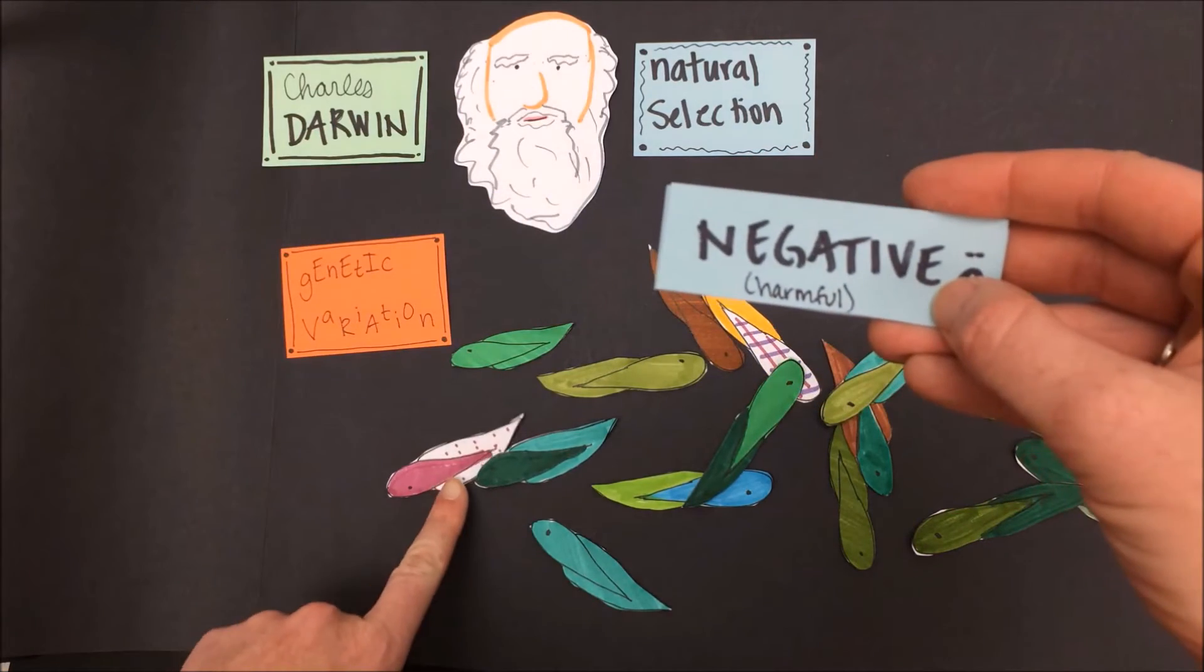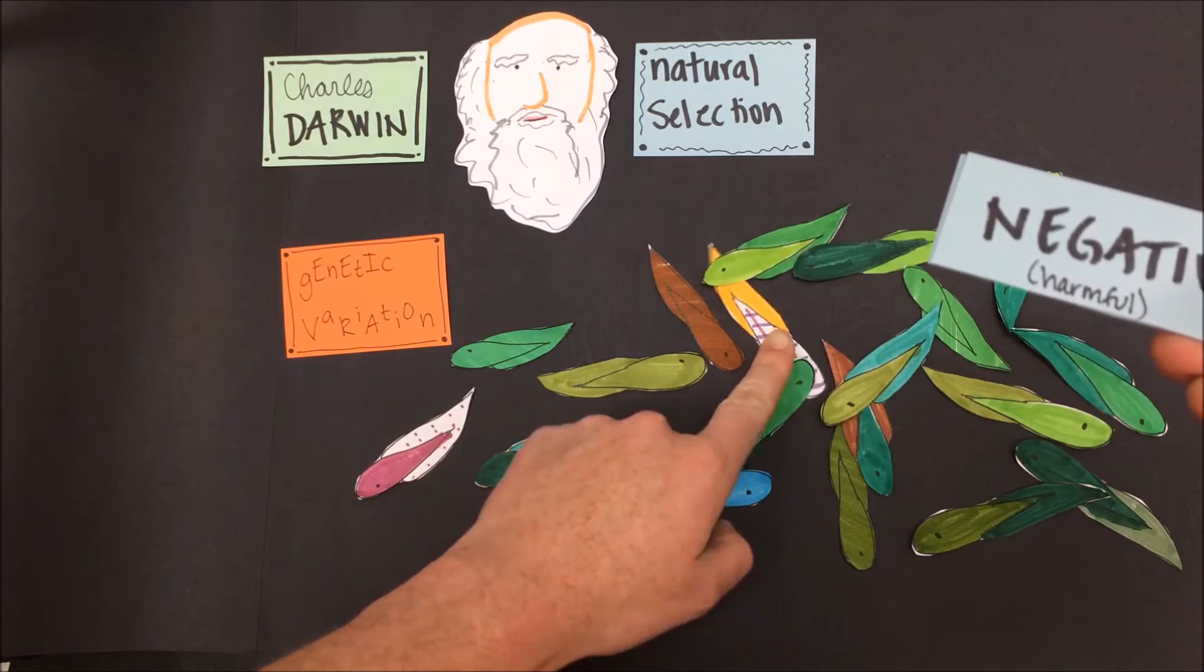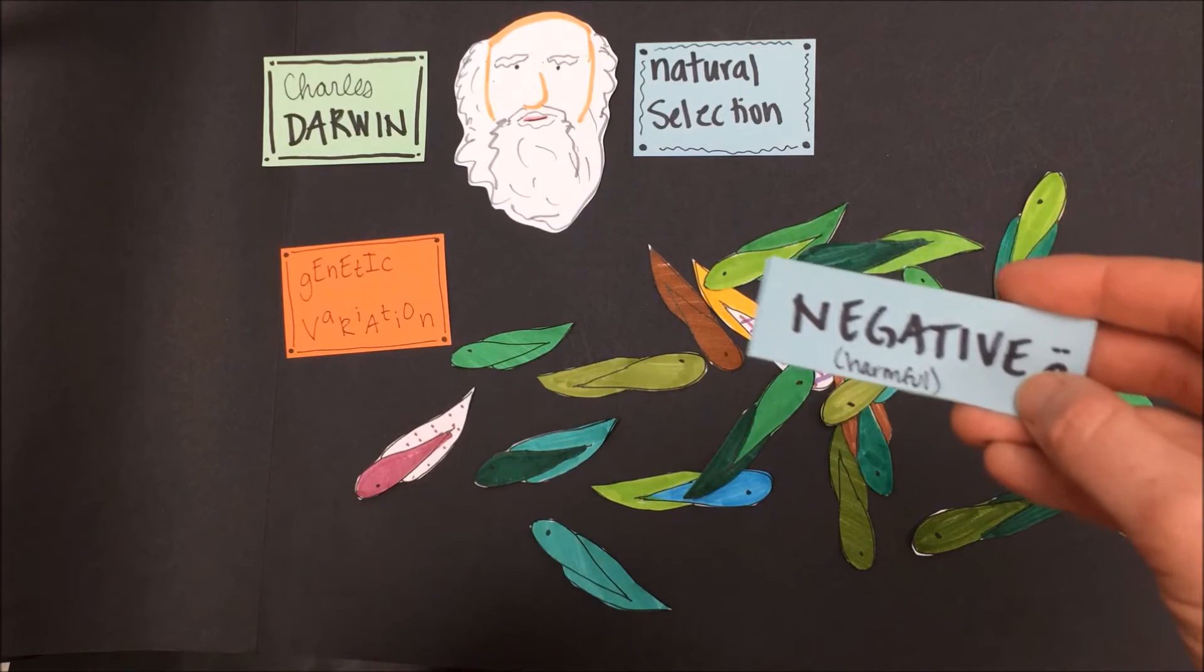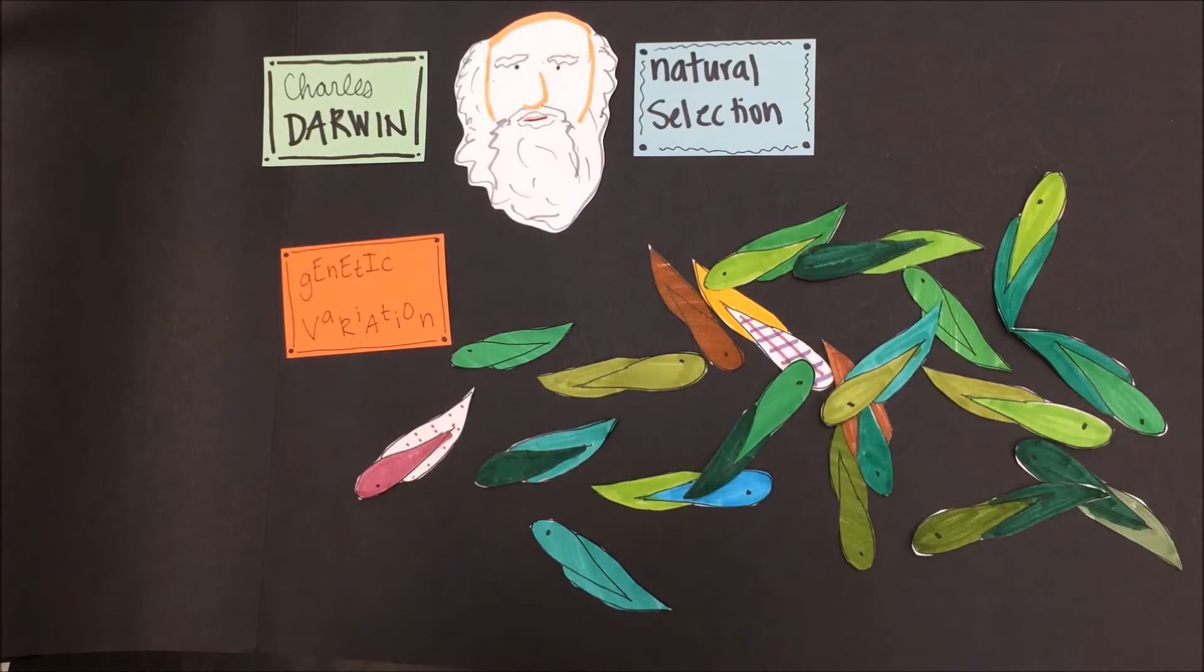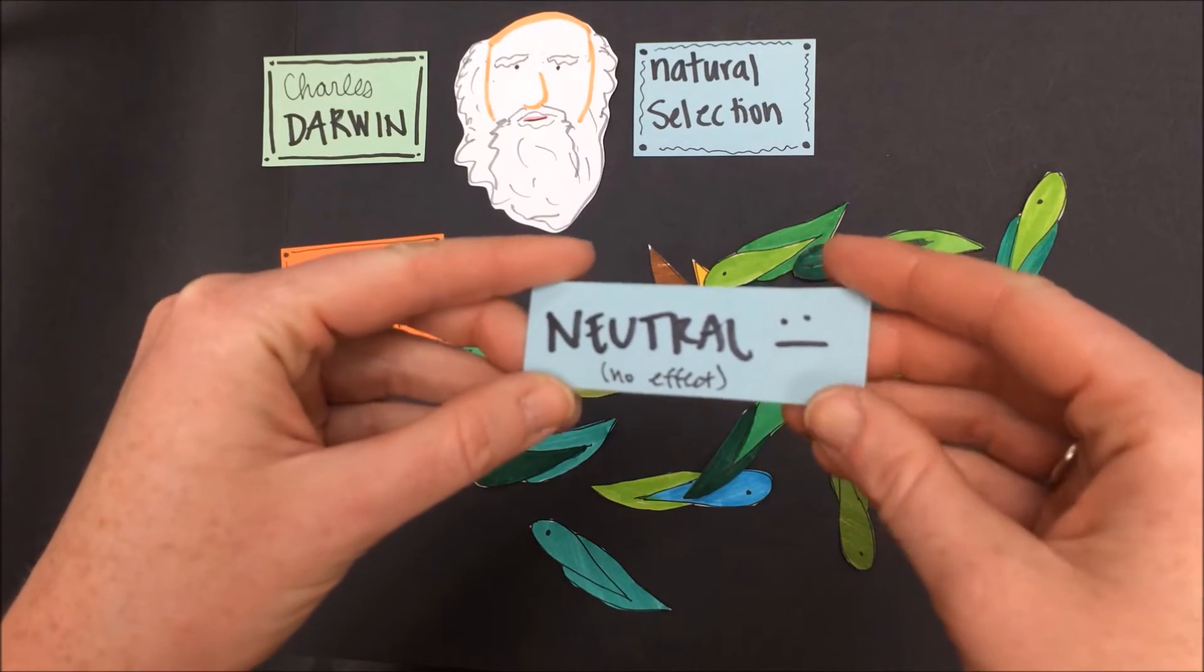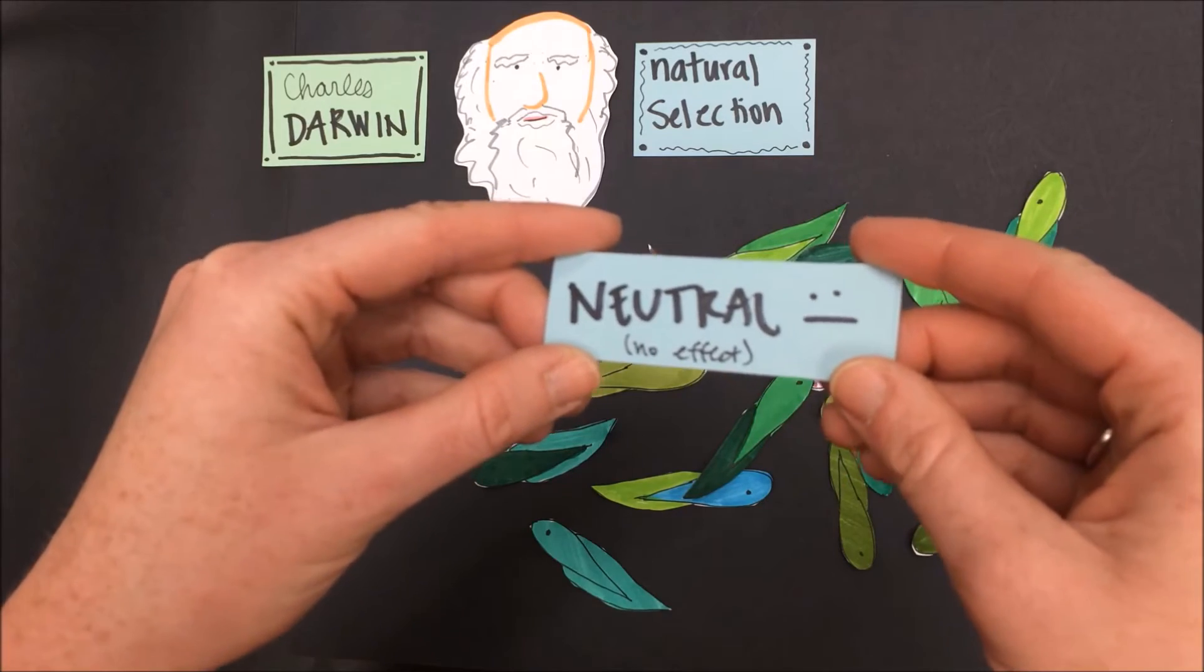For example, some of the ones that have coloration that make them stand out a little bit more from the crowd might be more likely to get eaten by predators. However, most of these genetic differences or variations will be neutral and will have no effect.